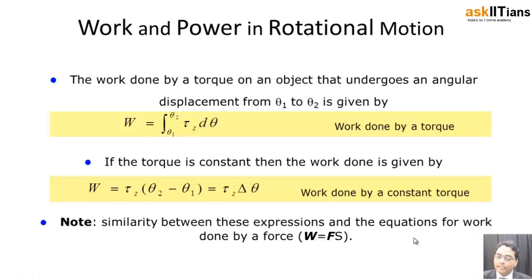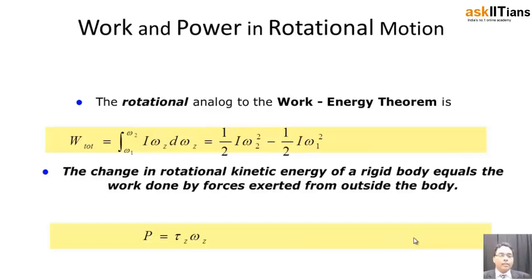If you have to talk about the work-energy theorem in this case, it goes in an exactly similar way. You don't even have to derive it. You already know that it is ½mv² final minus ½mv² initial. So just change the velocity into angular velocity. Once you change the velocity into angular velocity, you can write it in terms of the moment of inertia.